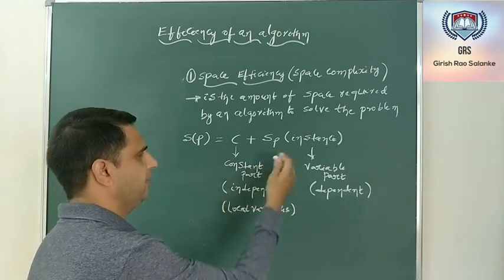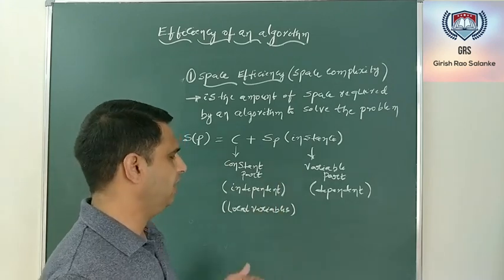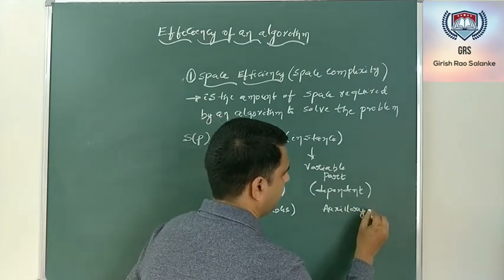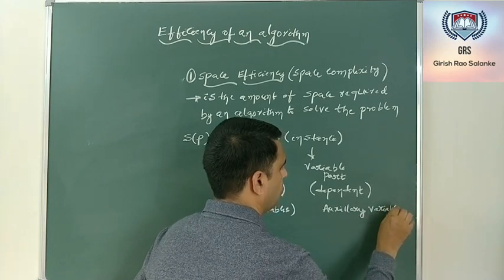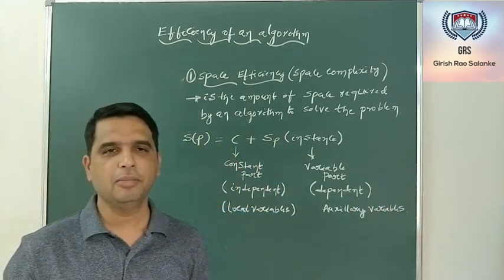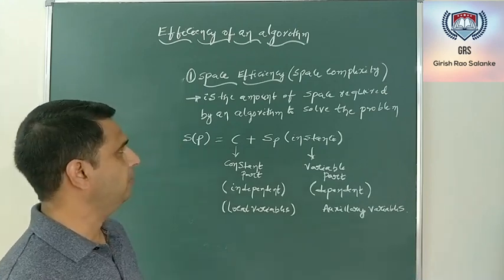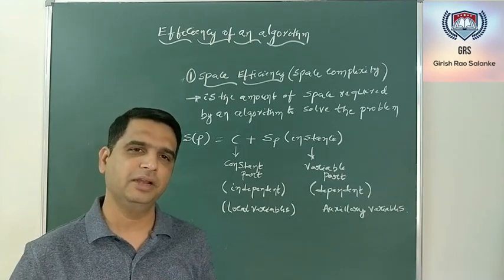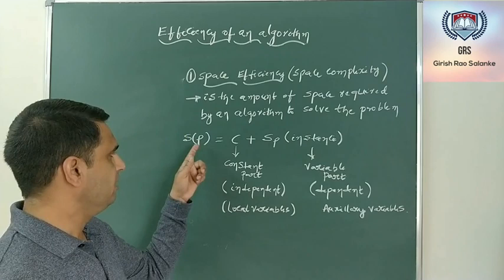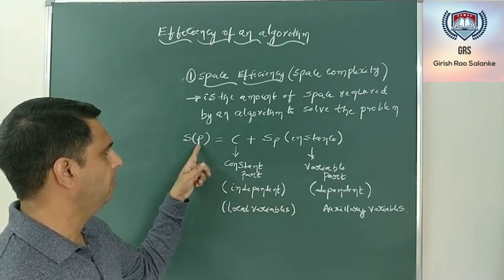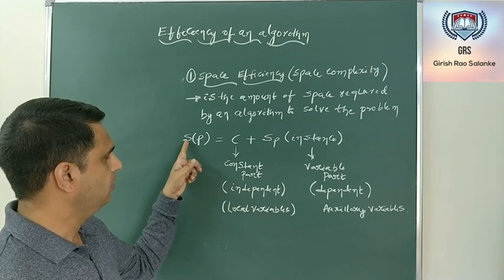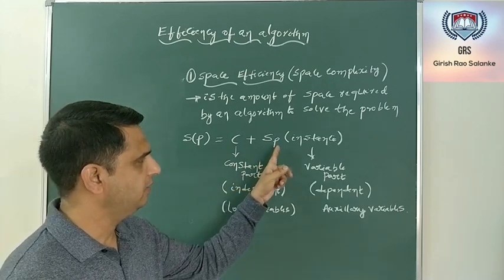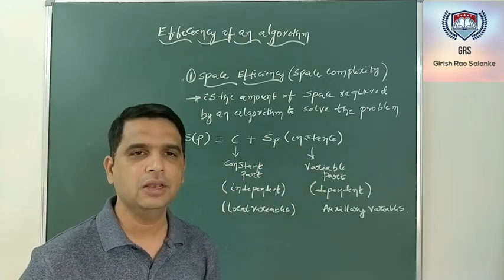S(P) of instance is the variable part representing the space used to store the temporary or auxiliary variables. To summarize, the space complexity S(P) is the amount of space required by an algorithm to solve a particular problem, expressed as the space required to store the constant part plus the space required to store the variable part used in the algorithm.